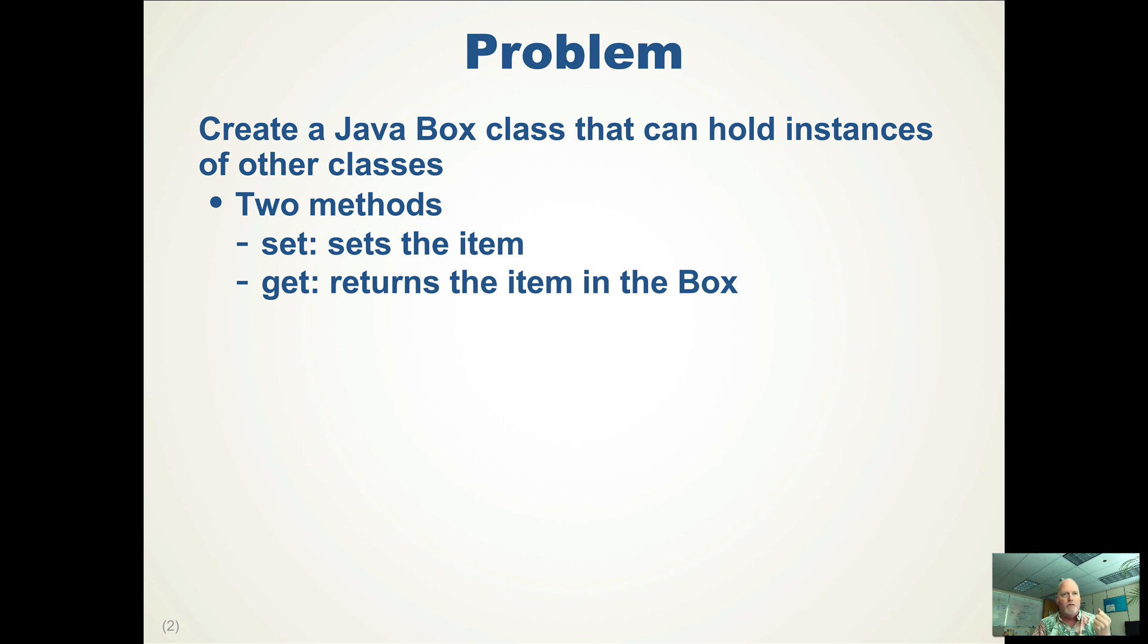It holds an item, so it has two methods: set, which sets the item in the box, and get, which returns the item in the box.